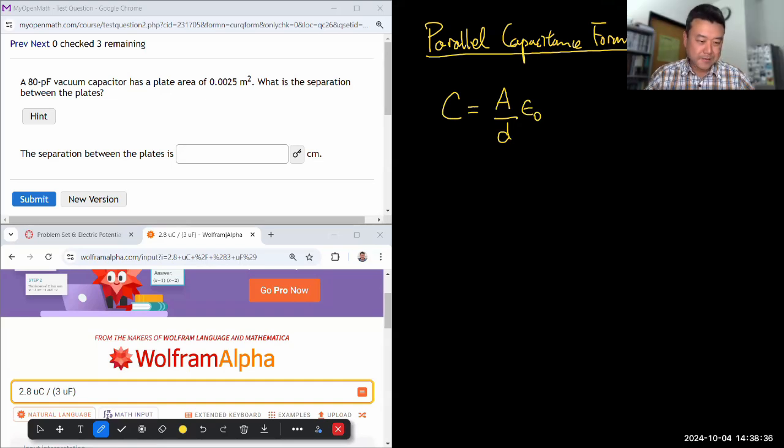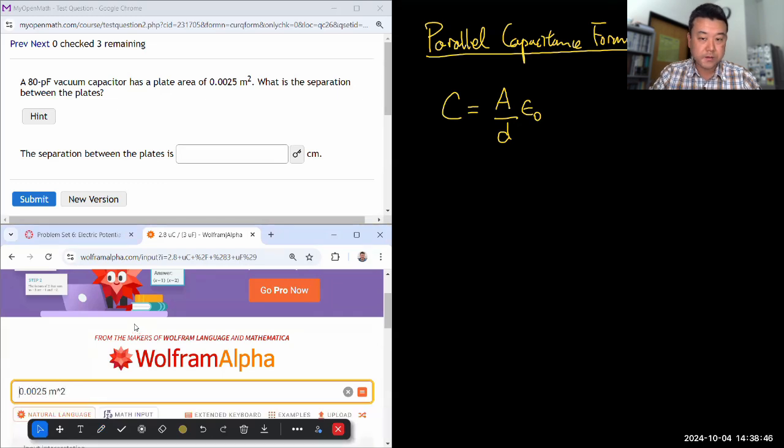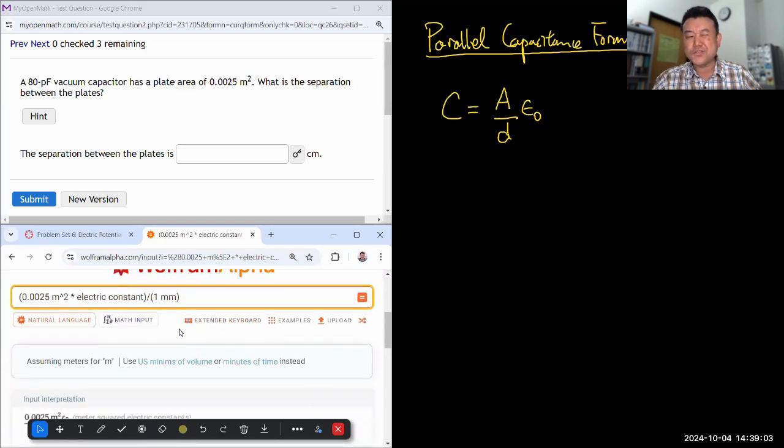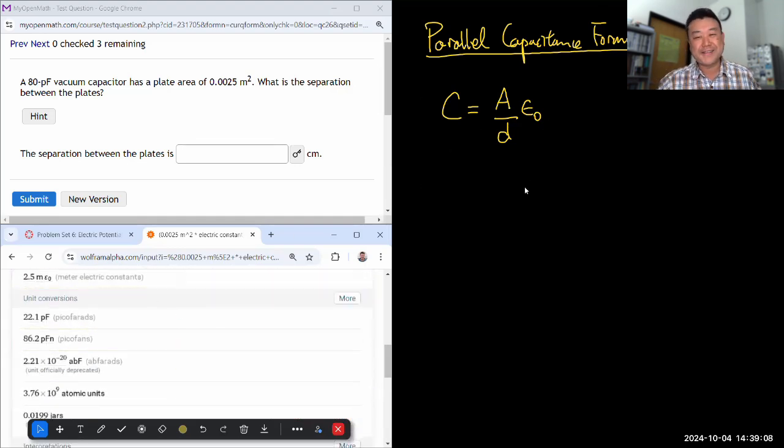Let me see if I memorized it correctly. If I have, then when I put in something like some area, 0.0025 meters squared times electric constant, another name for permittivity of free space, divided by the distance. So, let me make up a distance, one millimeter. Then I should get an answer in units of capacitance. If I do, that's an indication that I did memorize it correctly.